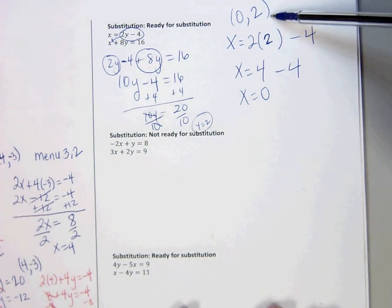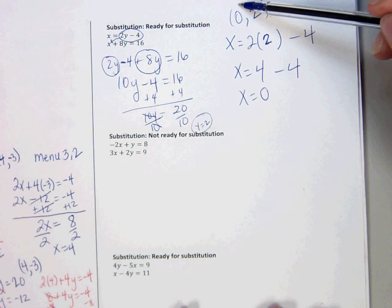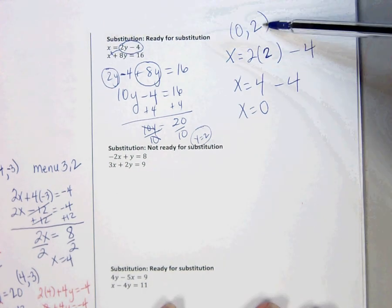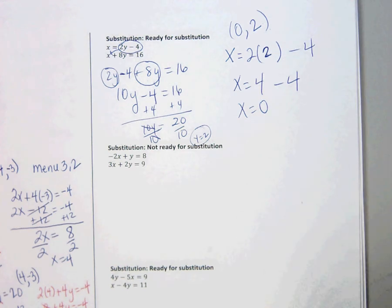Which means when you graph it, it's going to cross at 0, 2. But we didn't graph. We used the substitution method to show us. I'm going to menu 3, 2 this to make sure that my answer is correct.